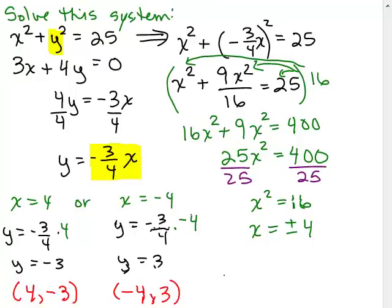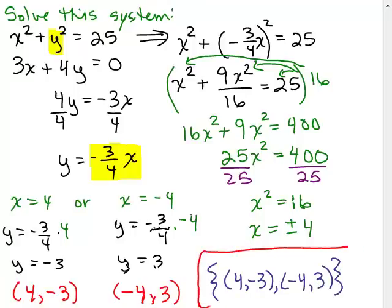How about I use blue here? So my solutions look like they're 4 negative 3 and negative 4, 3. Looks like those are the answers which we'll check.